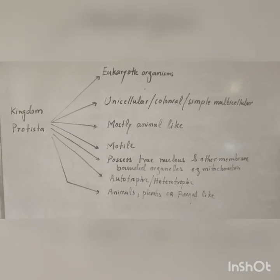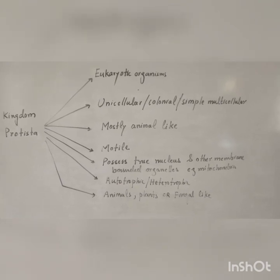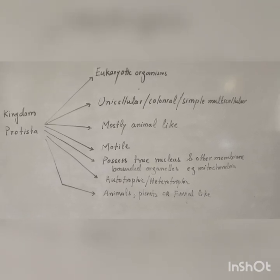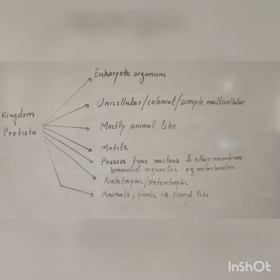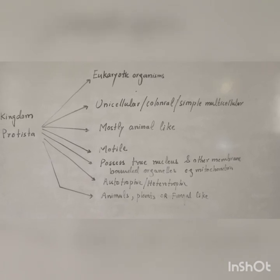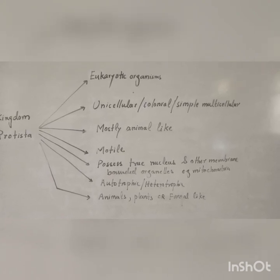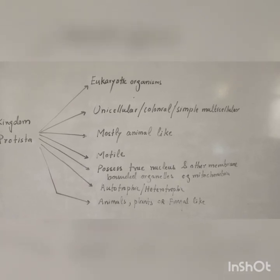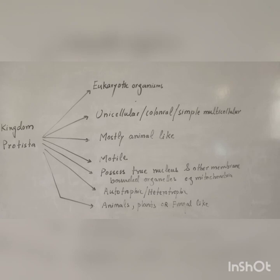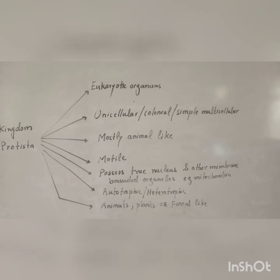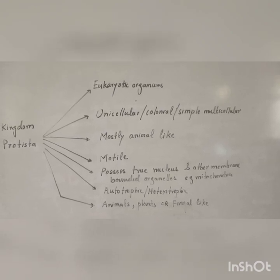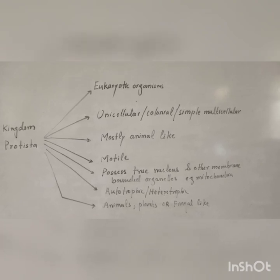The second kingdom is Kingdom Protista. This kingdom includes organisms which have both plant-like and animal-like characters, but mostly they show animal-like characters, except for the presence of chlorophyll. These organisms are more complex than the prokaryotic organisms of Kingdom Monera. They are all eukaryotic organisms, and they may be unicellular, colonial, or simple multicellular organisms.